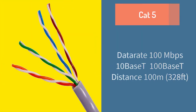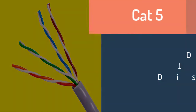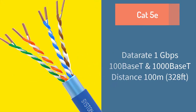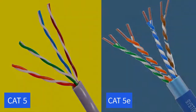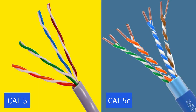Cat5 cable supports up to 100 Mbps data rate and is used for 10BASE-T and 100BASE-T Fast Ethernet networks. It can transmit data up to a distance of 100 meters or 328 feet. Cat5e is an upgraded version of cat5 and supports 1 Gbps data rate, used for 1000BASE-T Gigabit Ethernet networks. Both cat5 and cat5e support 100 MHz bandwidth, but the higher data rate in cat5e is achieved by increasing the number of twists, making it more resistant to crosstalk.